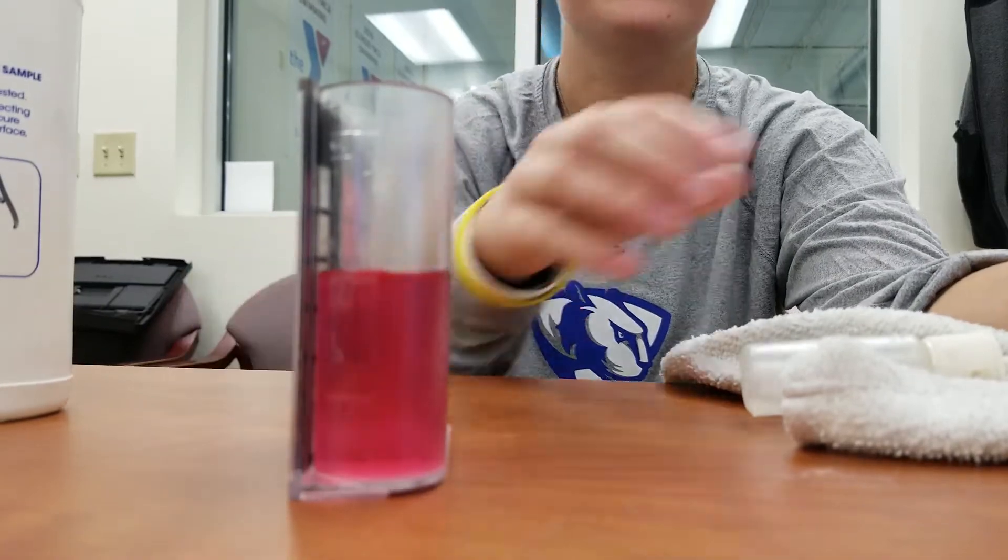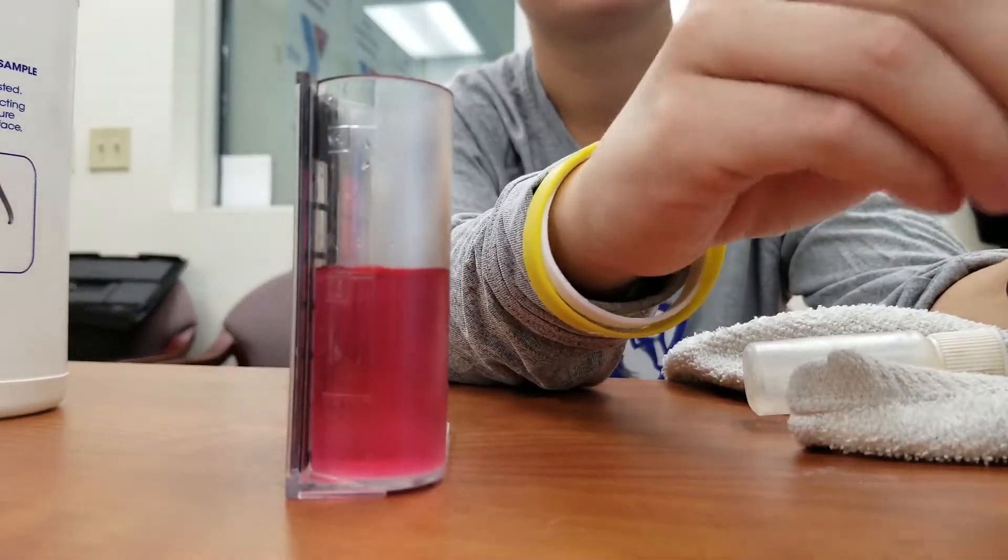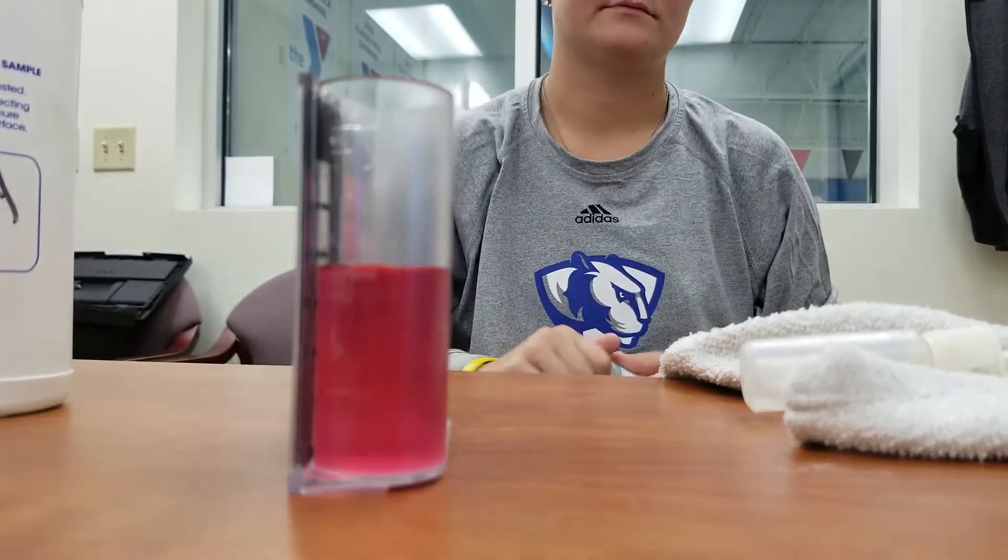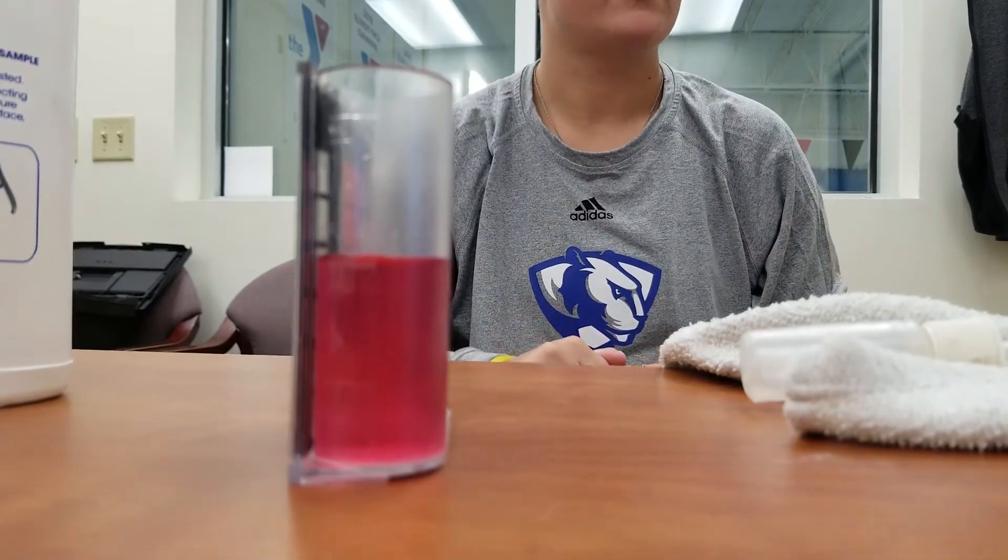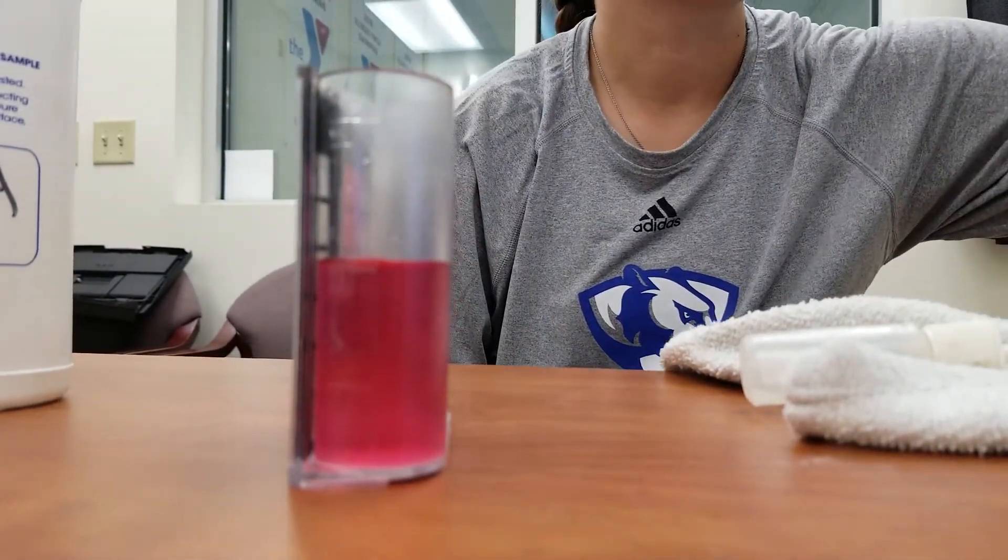So how many drops did we have? 10. 10 drops. 10 times 10 is 100. Our TA, or total alkalinity, is 100, which is about the ballpark that we're looking for.